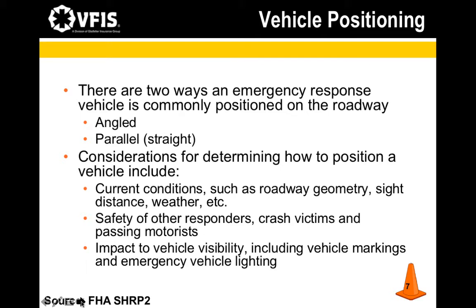There are two ways a vehicle can be positioned on the roadway: angled, meaning the vehicle is positioned at an angle with respect to the travel lanes, or parallel, meaning the vehicle is positioned parallel to the travel lanes. When positioning a vehicle, consideration should also be given to angling the vehicle in whichever direction it is desired for traffic to move or transition, since the vehicle's direction provides a visual cue to motorists.